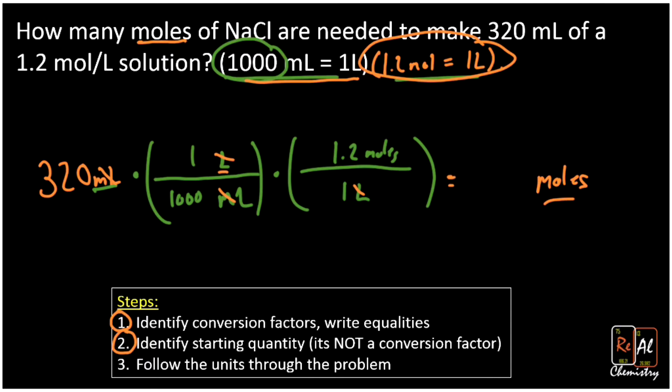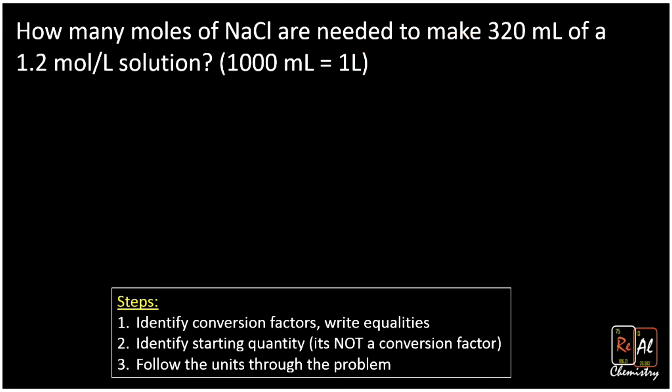If I round that to two sig figs, because my input has two sig figs, I'm going to get 0.38 moles. So now you know you need 0.38 moles of sodium chloride to make 320 milliliters of a 1.2 mole per liter solution. So that's how these conversion factors, these secret hidden conversion factors are so helpful. You could have done this with the molarity equation, which you'll probably learn, which is molarity equals moles over liters. Or you can just treat it as a conversion problem, which is frankly much easier than doing the algebra.